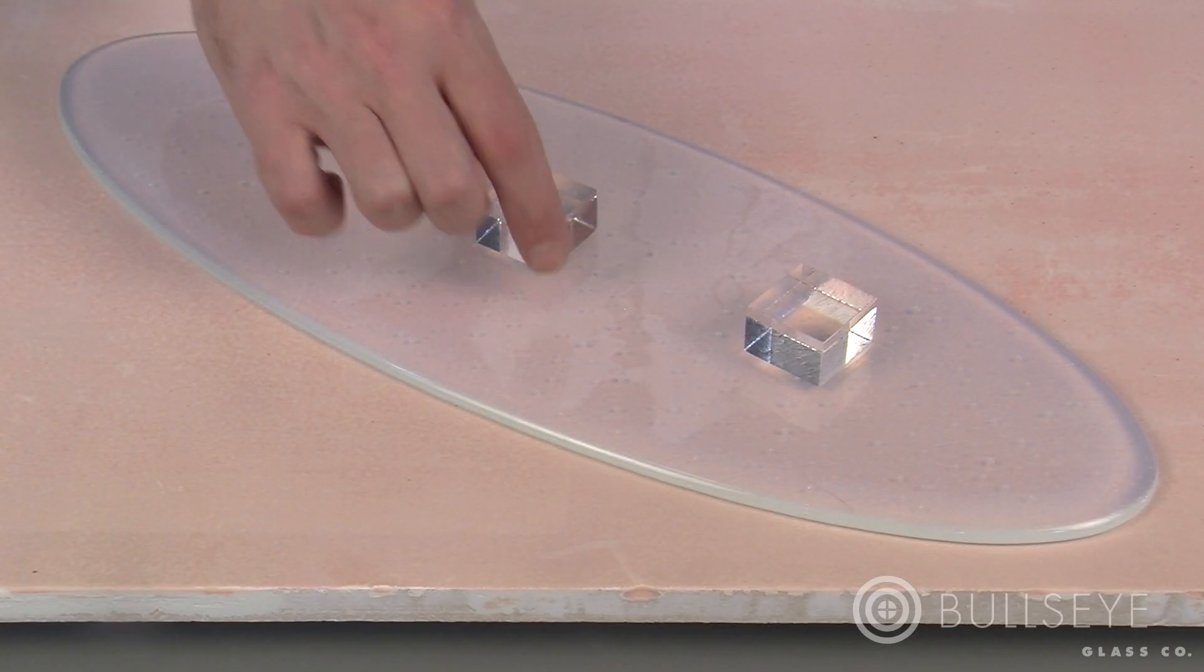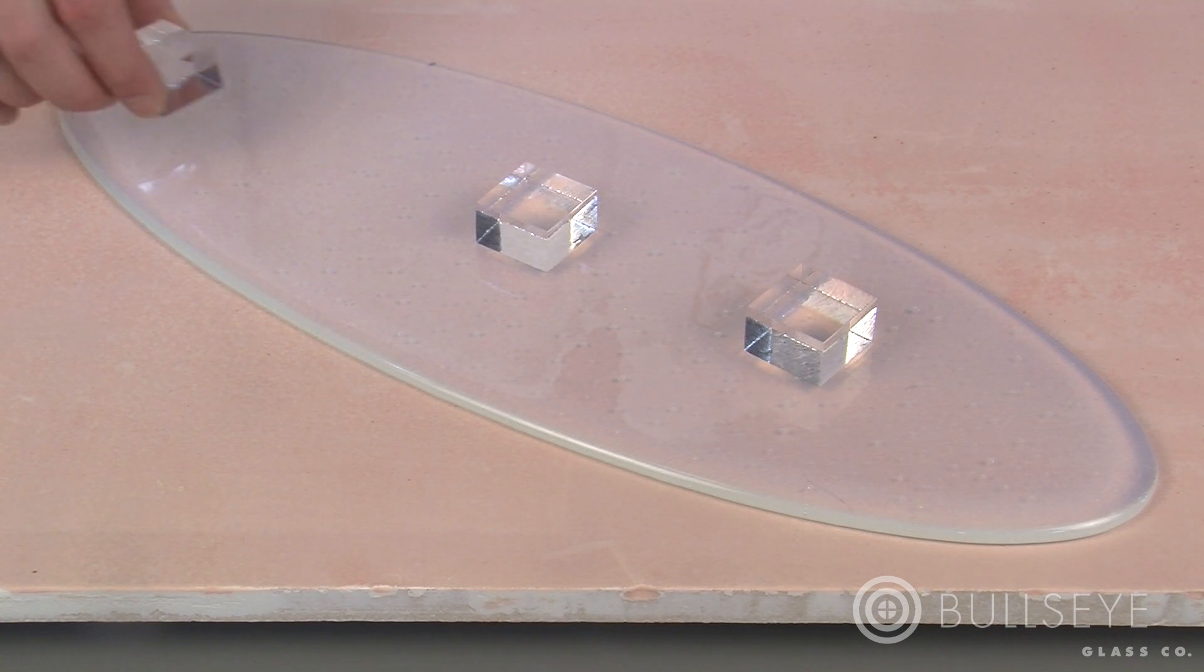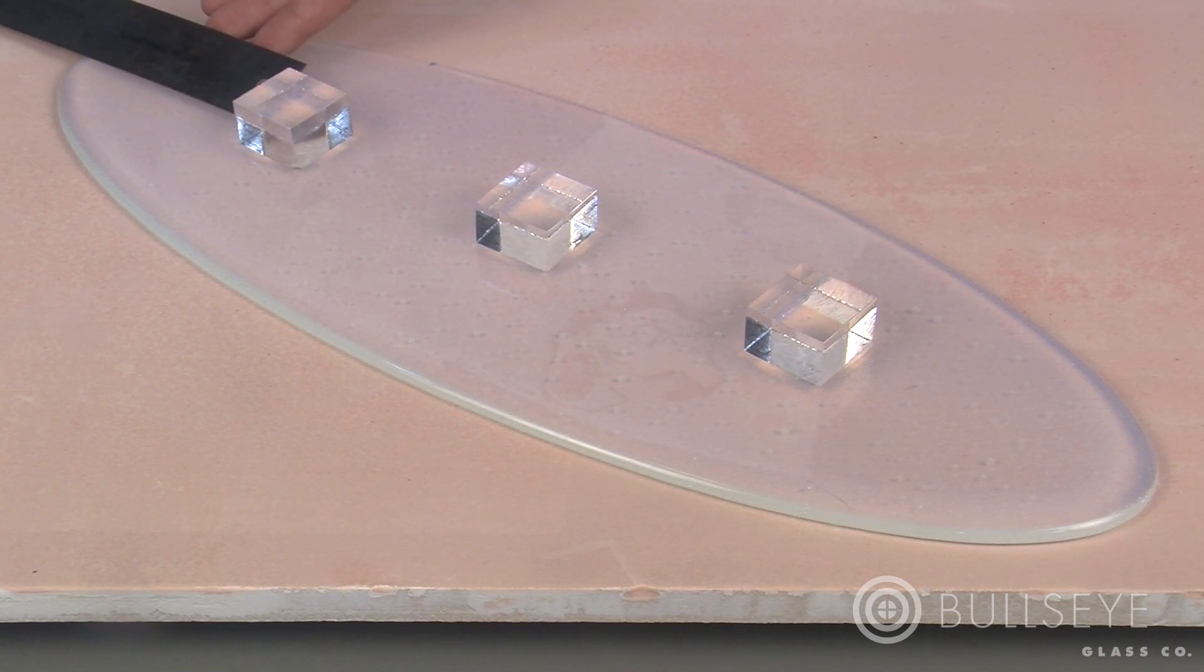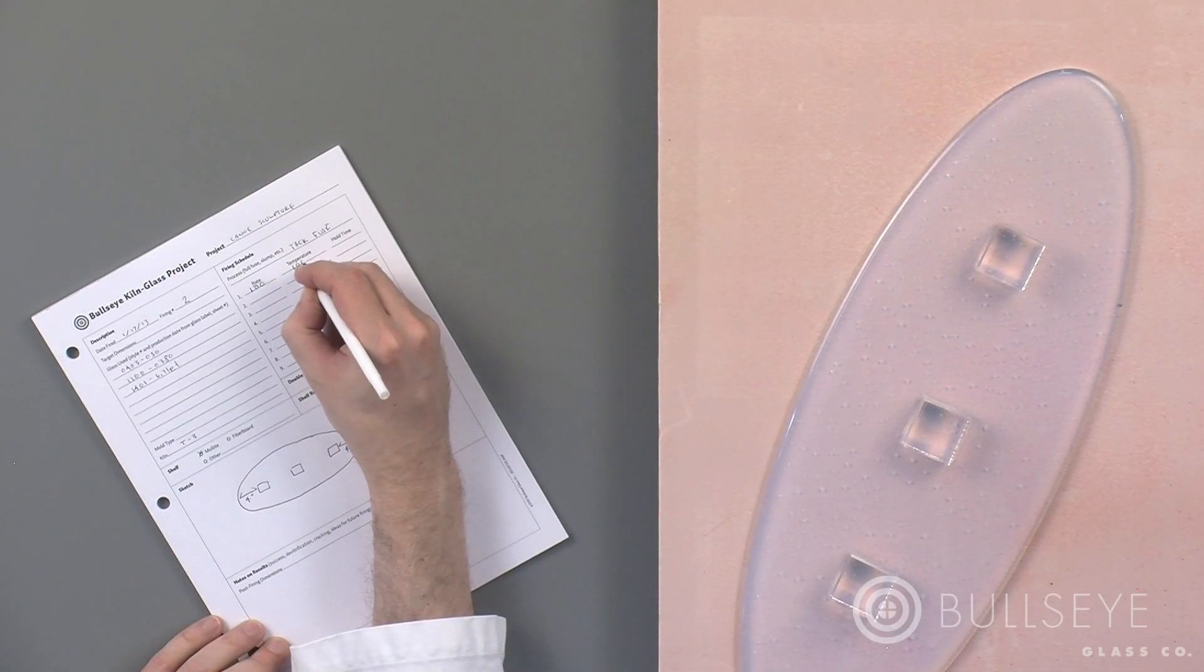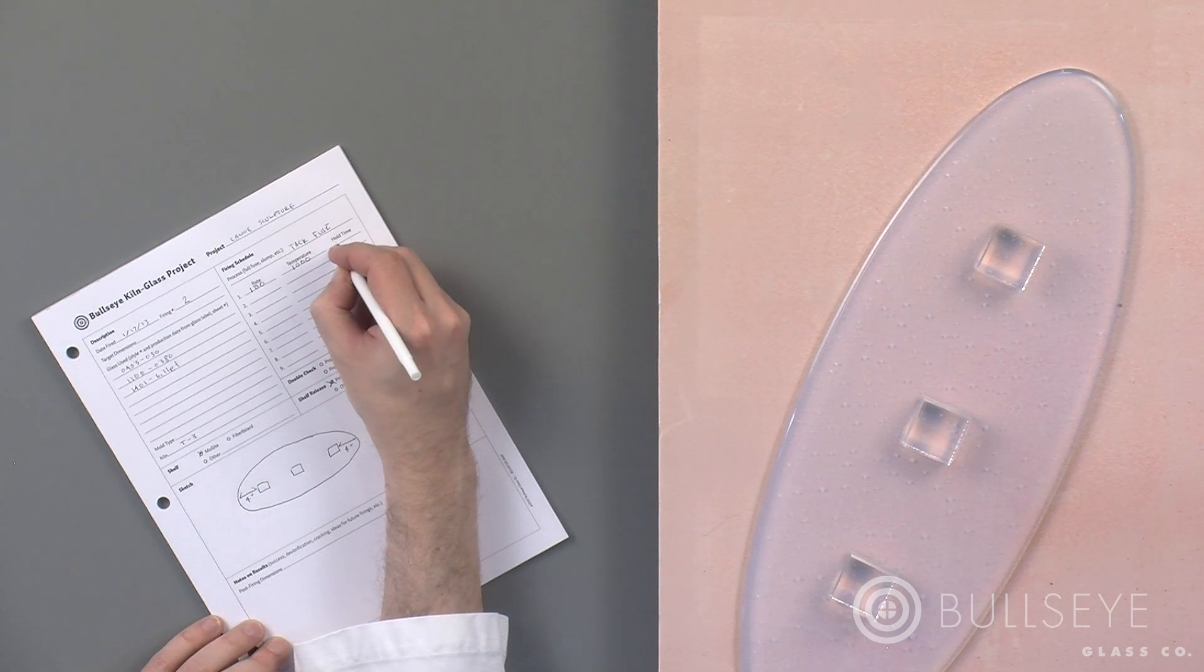The variations in thickness we see in some tack fusings are cause for special consideration in the heat-up and cool-down phases of a firing. In this example, a piece of billet is stacked on a base fusing. This will insulate the area under the stack, increasing the likelihood of thermal shock. To prevent this, the first step is to slow the initial heating rate.